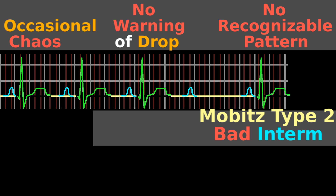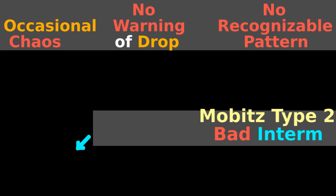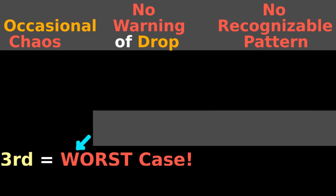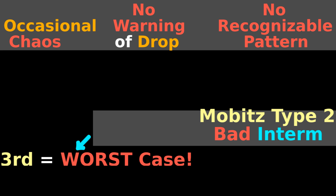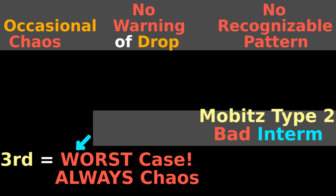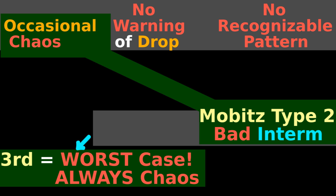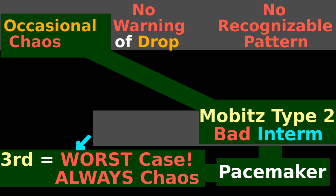This bad intermediate can progress into the worst case scenario of a complete third degree heart block. The bad intermediate means that you occasionally have chaos, while the worst case heart block means you always have chaos. If you have chaotic heartbeats, either occasionally or constantly, that's a good indication that it's time to get a pacemaker.